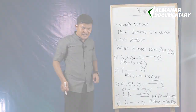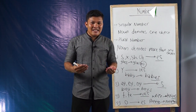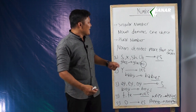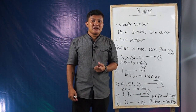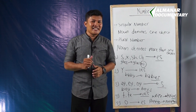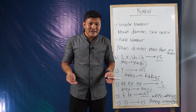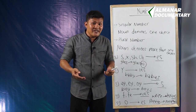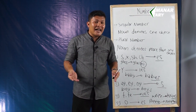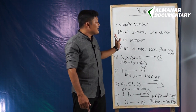Baik adik-adik, kita baru saja mempelajari tentang number. Number adalah jumlah satu atau lebih. Dalam grammar, number terbagi menjadi dua: singular number ketika suatu benda berjumlah hanya satu, dan plural number ketika kata benda berjumlah lebih dari satu. Contohnya, 'a chair' (satu kursi) diubah menjadi 'chairs' dengan menambahkan S.